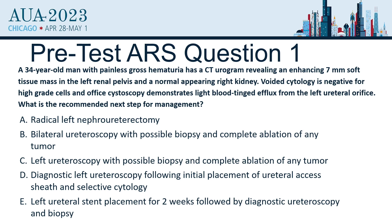Should you take this patient directly to nephroureterectomy? Should you do bilateral ureteroscopy with possible biopsy and ablation? Should you do only a left ureteroscopy with possible biopsy and complete ablation? A diagnostic left ureteroscopy followed by initial placement of an access sheath and selective cytology — going in with a sheath, obtaining cytology but not treating anything? Or would you place a left ureteral stent for two weeks and then follow that with diagnostic ureteroscopy?